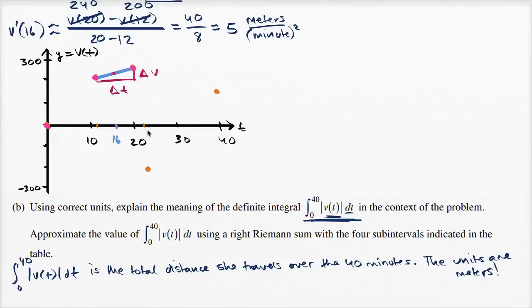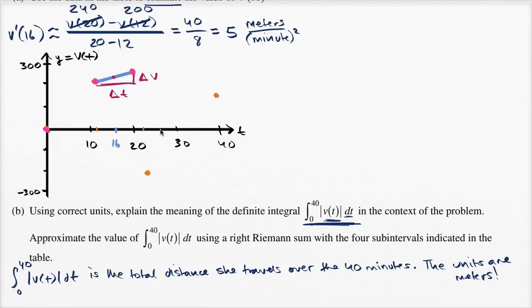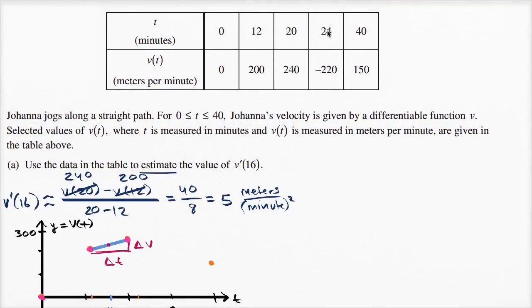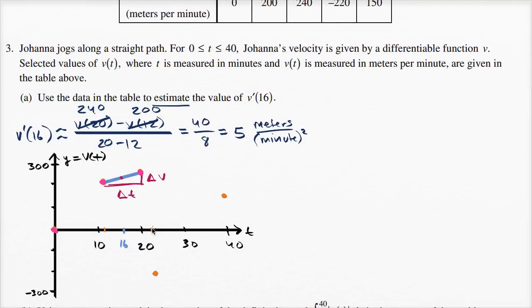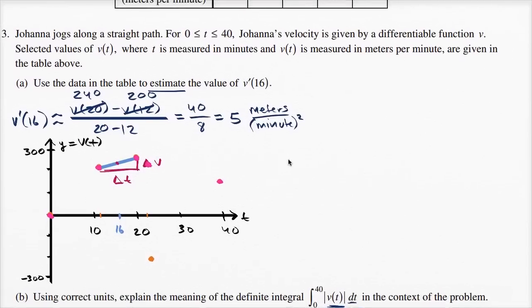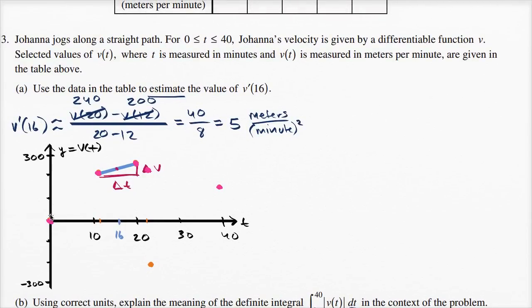The absolute value of negative 220 is positive 220. When t equals 24, v of t is negative 220 — she's jogging in the other direction — but we take the absolute value, so her speed at t equals 24 is 220. We don't know the actual speed function; it might look something like this. This is the absolute value of v of t, which is the speed function.